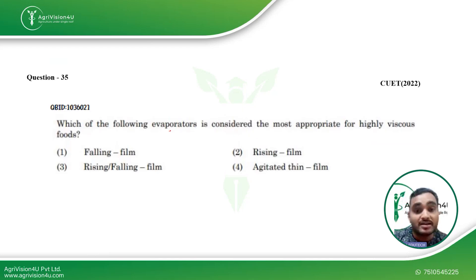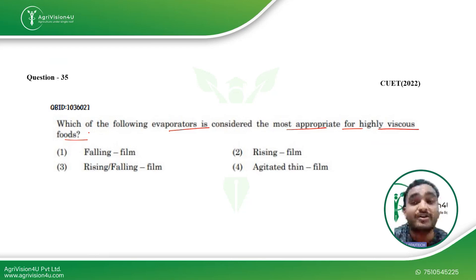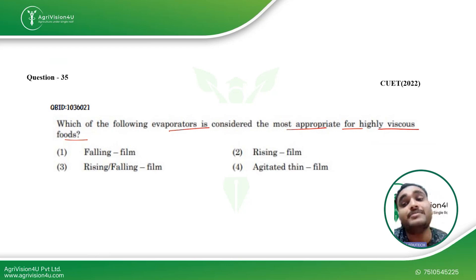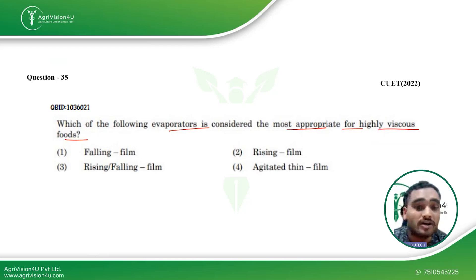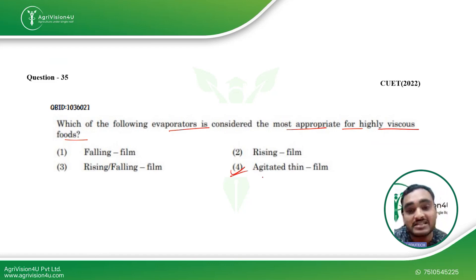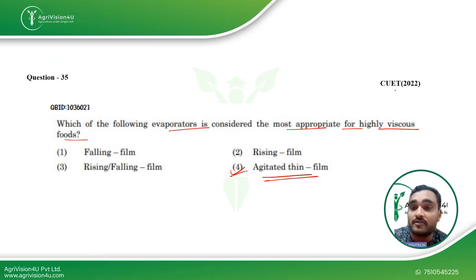Which of the following evaporators is considered most appropriate for highly viscous foods? The problem with highly viscous foods is that if exposure time is more, they will start to burn and there will be texture and flavor changes. We need continuous agitation, and that makes the difference for the evaporator used for highly viscous foods. So agitated thin film evaporator is the best one used for highly viscous foods. We discussed this when covering food plant equipment in the food engineering section. This was also asked in CUET 2022.